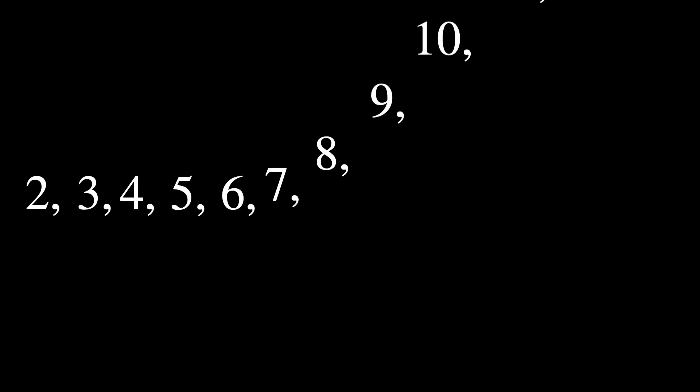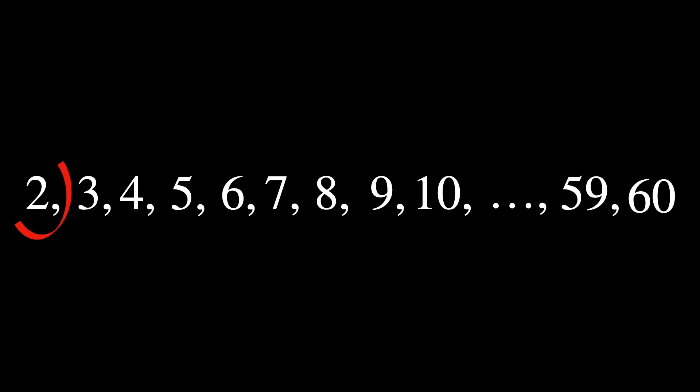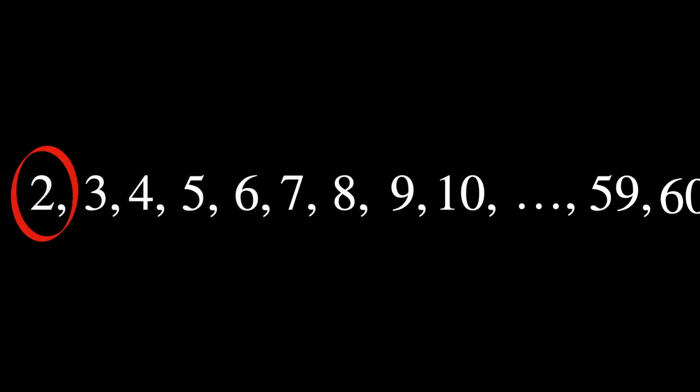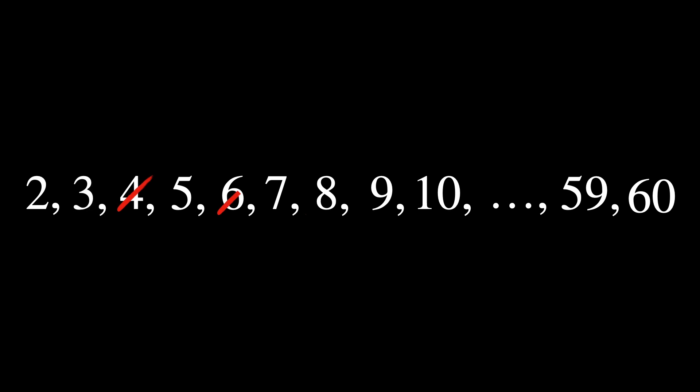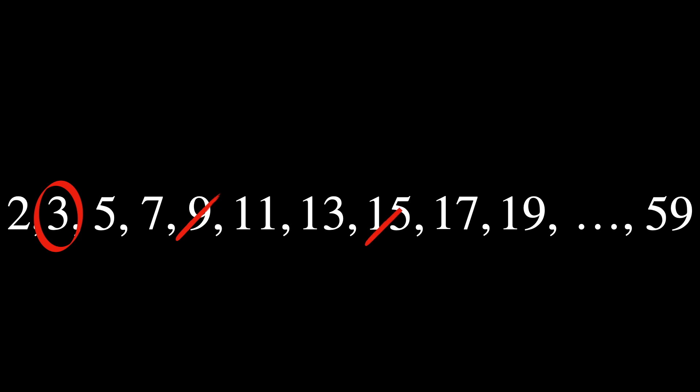Start by listing all the numbers from 2 to your desired upper limit — say this limit is 60. Select the smallest number in your list that hasn't been marked; this number is a prime number. The first time you do this, you'll select 2, since it's the smallest prime. Then cross out all multiples of 2. Move to the next number that is not crossed out, 3. Circle it because it's a prime.